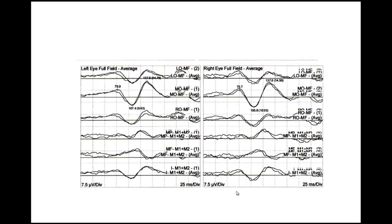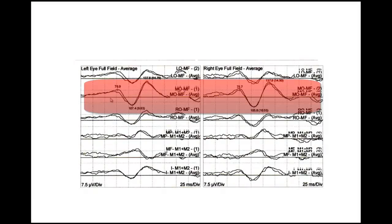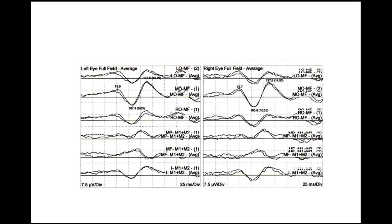Looking at the first example, using a six-channel montage and focusing on the mid-occipital to mid-frontal channel: first we identify a triphasic morphology, which is the normal morphology of P100. It is reproducible because two overlapping lines are visible. The latency of P100 on the left is 107.4 ms and on the right is 105 ms — both within normal limits and the interocular latency difference is not significant. This is a normal visual evoked potential, indicating integrity of the visual pathways bilaterally.